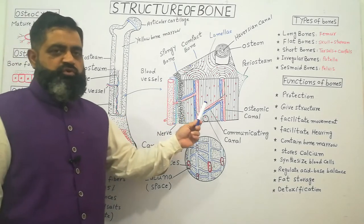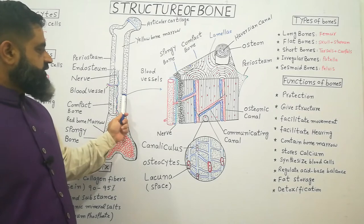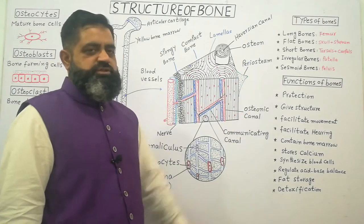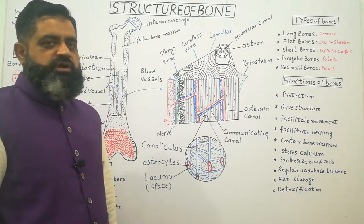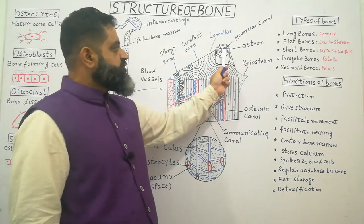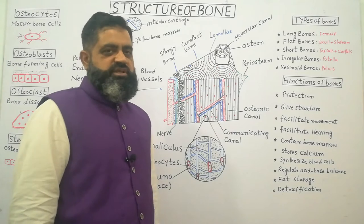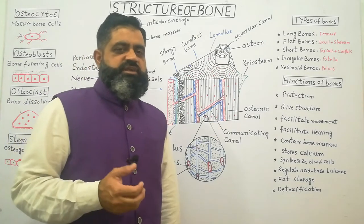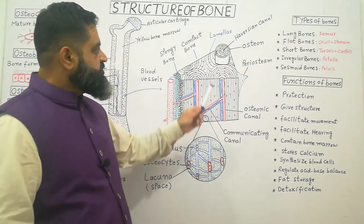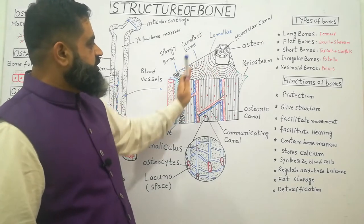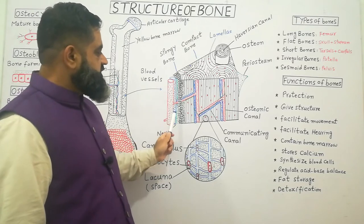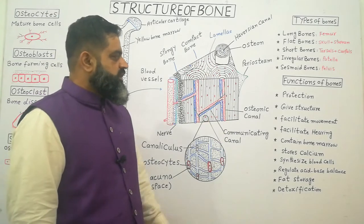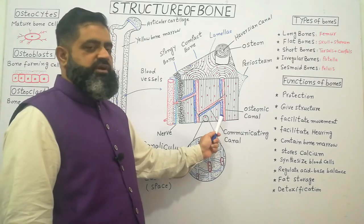Now we will discuss the internal structure of compact bone. In this cross-section diagram, the outermost layer is the periosteum. Inside compact bone there are units known as osteones. Each osteone contains a central cavity known as the Haversian canal, which is surrounded by concentric lamellae containing osteocytes and lacunae. The spongy bone portion contains blood vessels, nerve supply, and the lymphatic system.